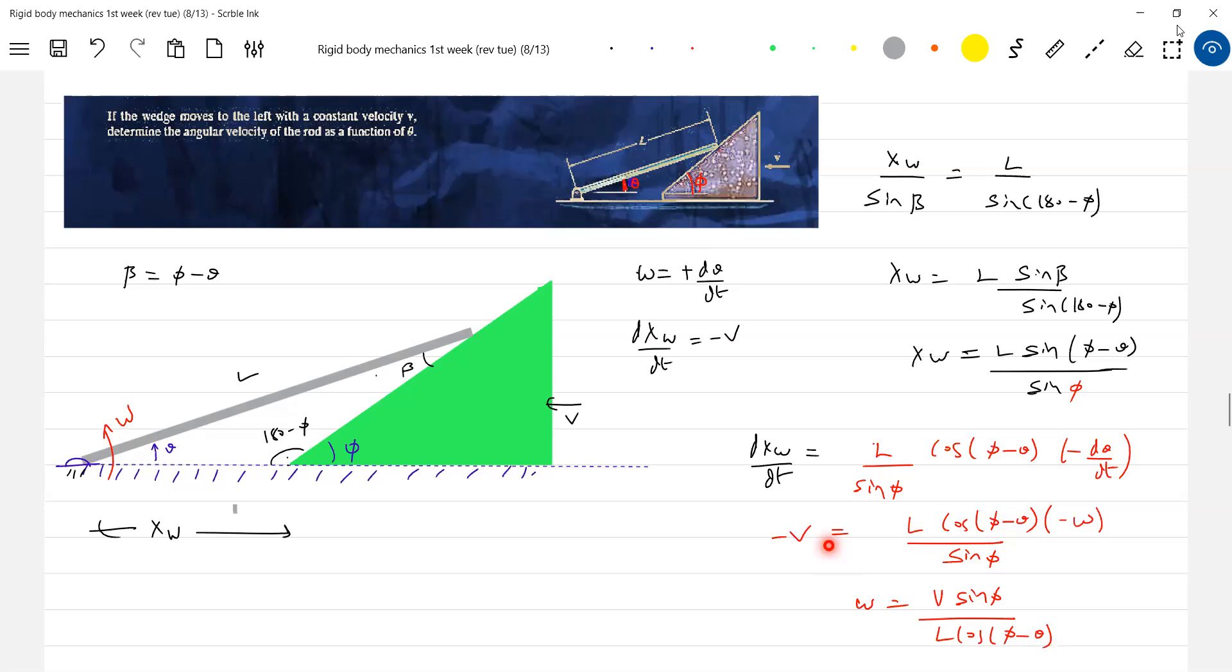Can we say velocity along common normal is equal? Oh okay fine, it must be. Then you can get it. Yeah, you'll get very easily. Yeah, that's why I think you are having now multiple approaches. Velocity along common normal should be equal.